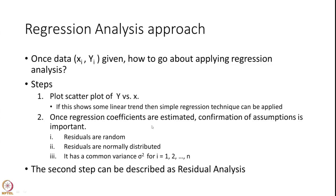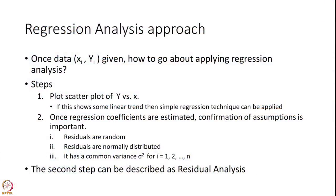Once the regression coefficients are estimated, confirmation of assumptions is very important. You have estimated the regression coefficients and conducted hypothesis testing to make sure none of the regression coefficients is zero. It is then important to confirm that the whole process of regression analysis has been carried out under three key assumptions: residuals are random, residuals are normally distributed, and they have a common variance σ² for all i = 1, 2, ..., n.